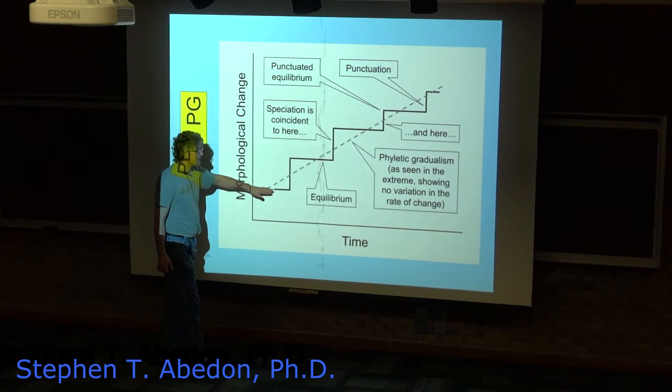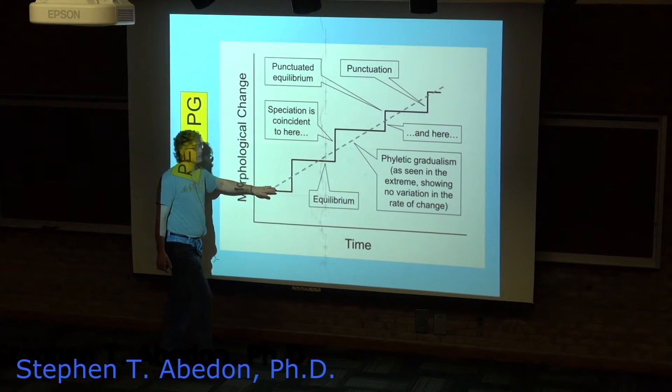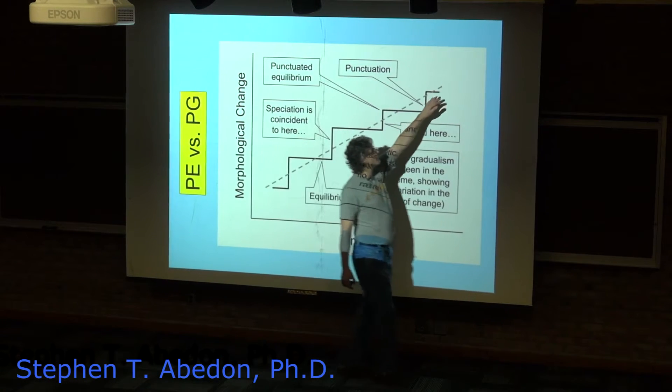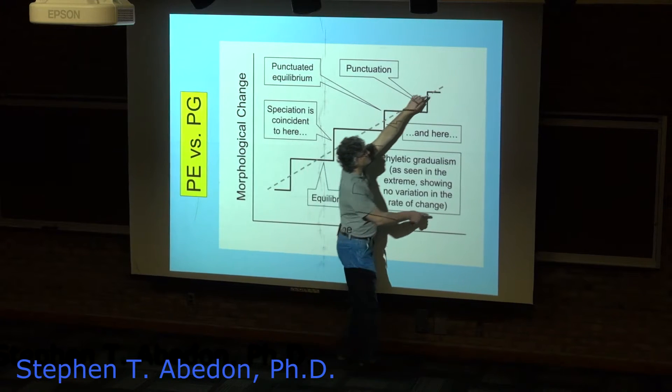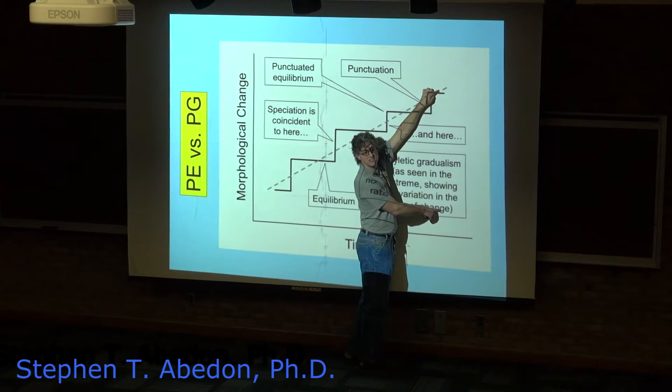Basically, as the population goes from being here to the population being here, that's some amount of change that you can quantify as this distance here.